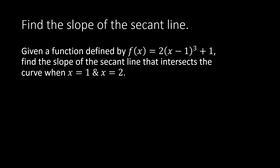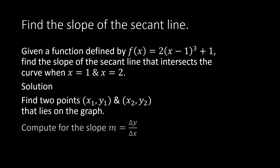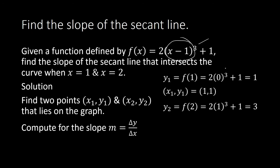To obtain the y coordinates, we evaluate the function when x is equal to 1 and when x is equal to 2. f of 1 is equal to 2 times 1 minus 1 raised to the 3rd power plus 1, which is just 0 plus 1. So y sub 1 is equal to 1, giving us the point (1, 1). For y sub 2, we evaluate when x is equal to 2: 2 times 2 minus 1 cubed plus 1, which equals 2 times 1 plus 1, which is 3. This gives us the point (2, 3).